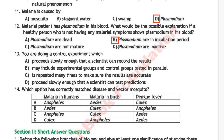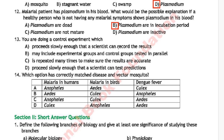MCQ number 13: you are doing a control experiment. The question may include experimental groups and control groups tested in parallel.